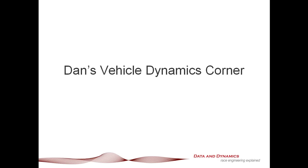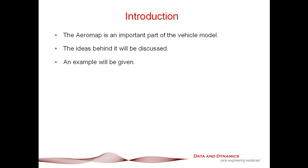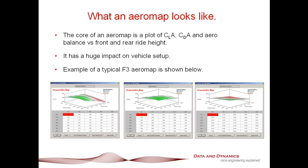What we're going to discuss is how ChassisSim goes about representing aero maps. The aero map is an important part of the vehicle model. Indeed, for CLAs, once you start pushing beyond about 1.7 to 2, the aero will pretty much dictate what you do with the setup. At its core, a race car aero map is effectively a plot of front and rear ride height of downforce or CLA, drag, CDA, and aero balance.